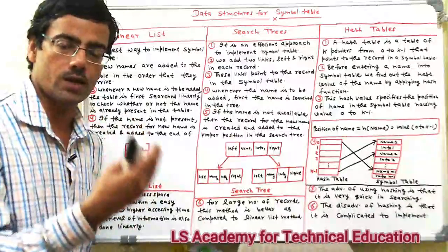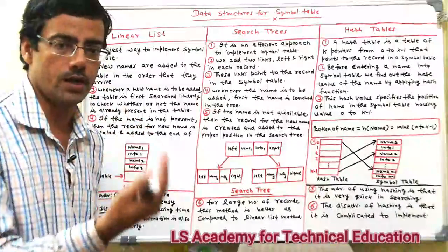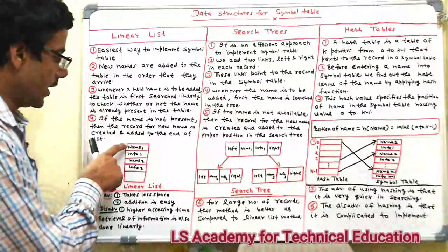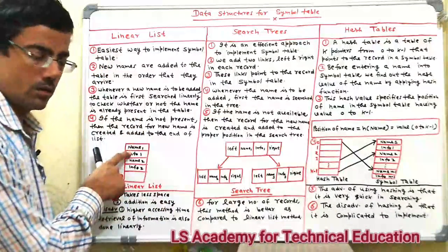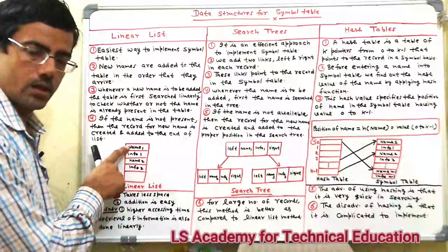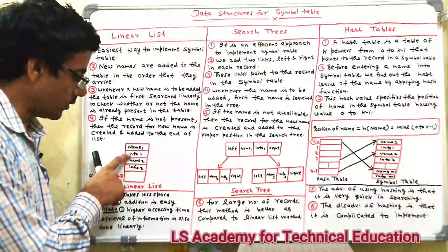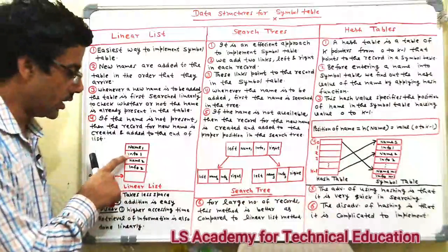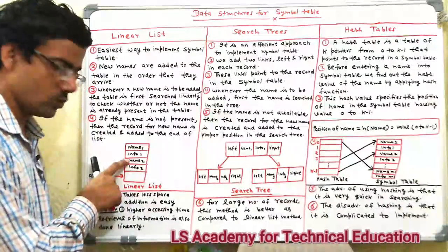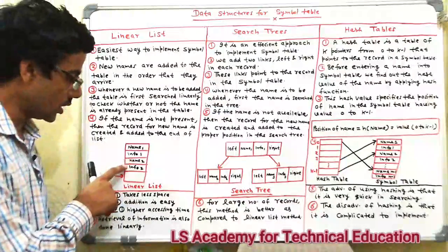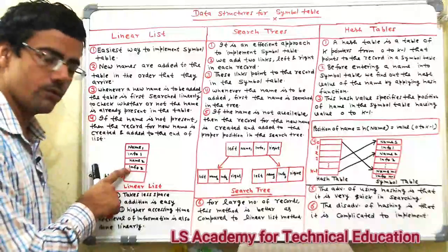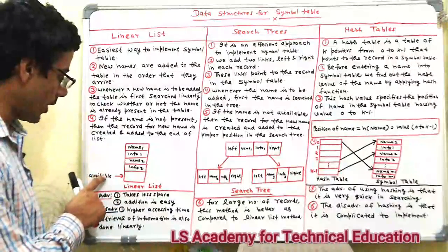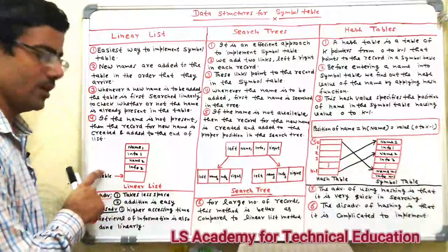Names are added in the order they arrive — name one is added with its associated information, then name two is added with its associated information, and so on. A pointer indicates the next available position.